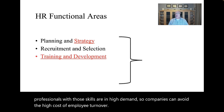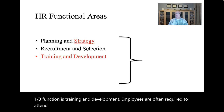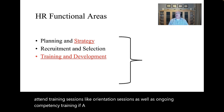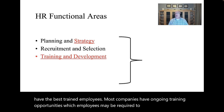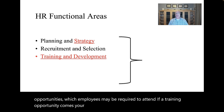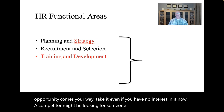A third function is training and development. Employees are often required to attend training sessions, like orientation sessions, as well as ongoing competency training. If a company wants to effectively compete, it has to have the best trained employees. Most companies have ongoing training opportunities which employees may be required to attend. If a training opportunity comes your way, take it — even if you have no interest in it now, a competitor might be looking for someone like you who has that necessary training.